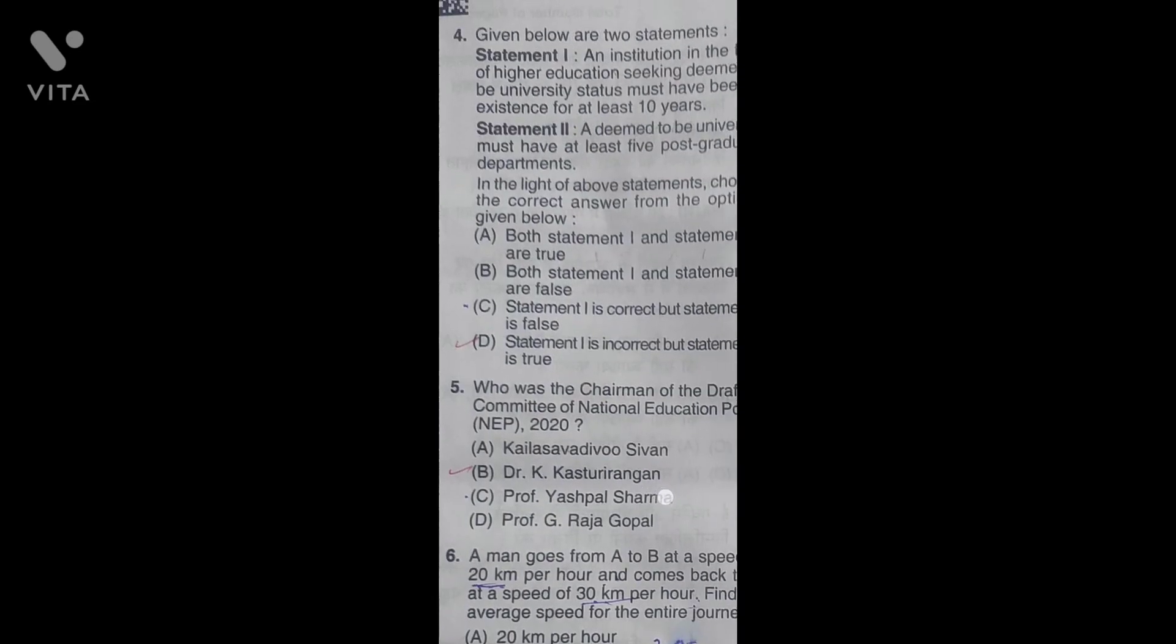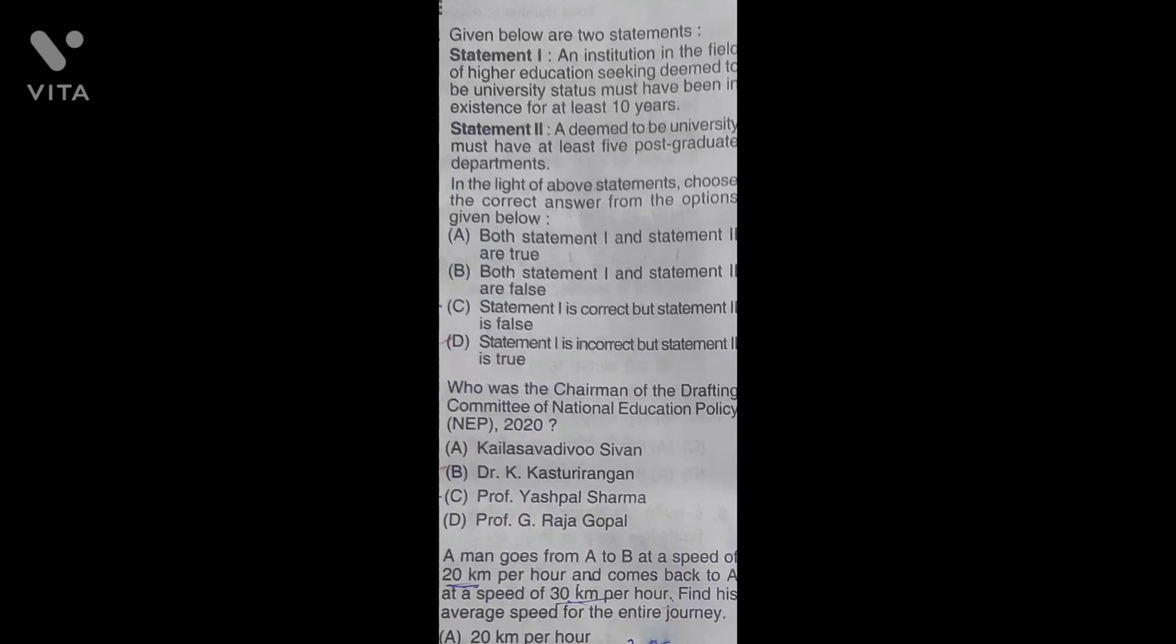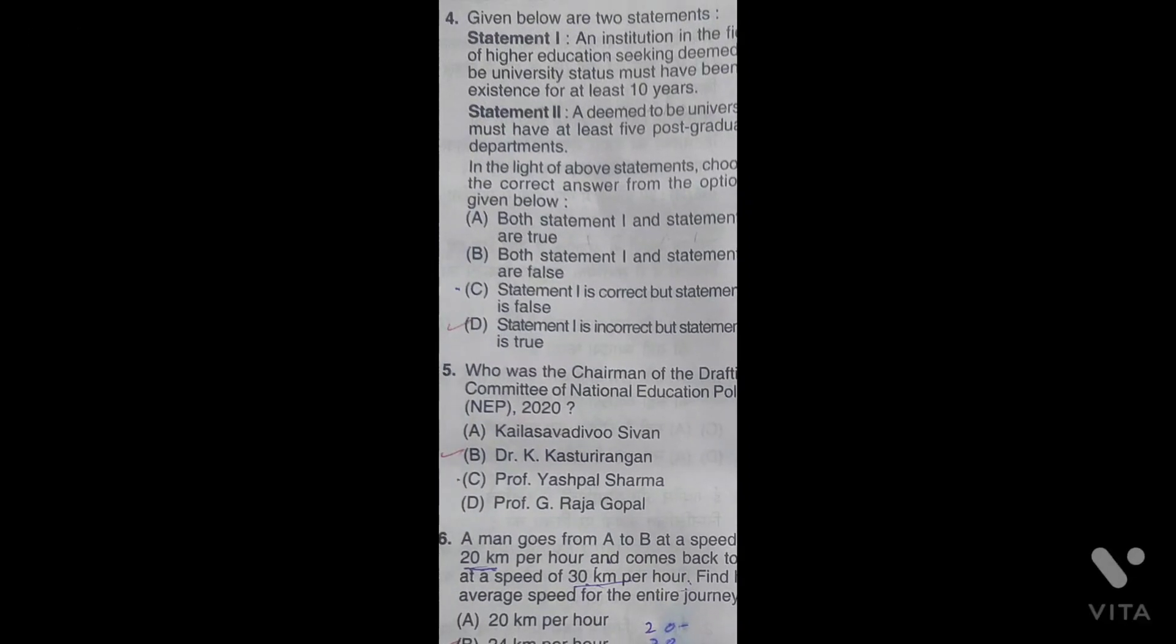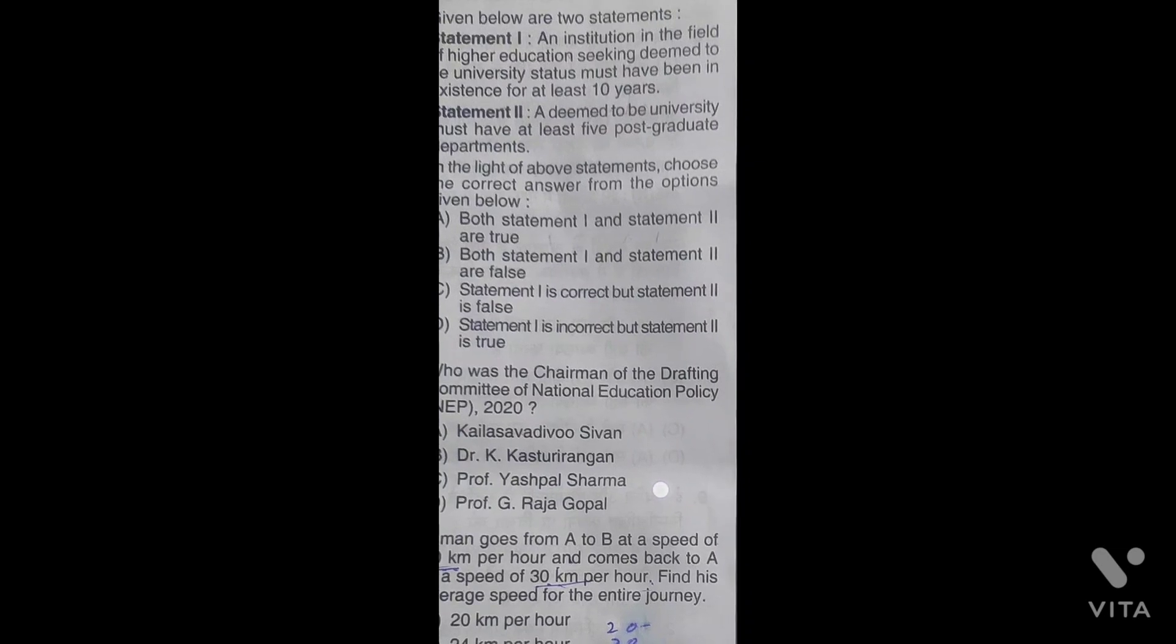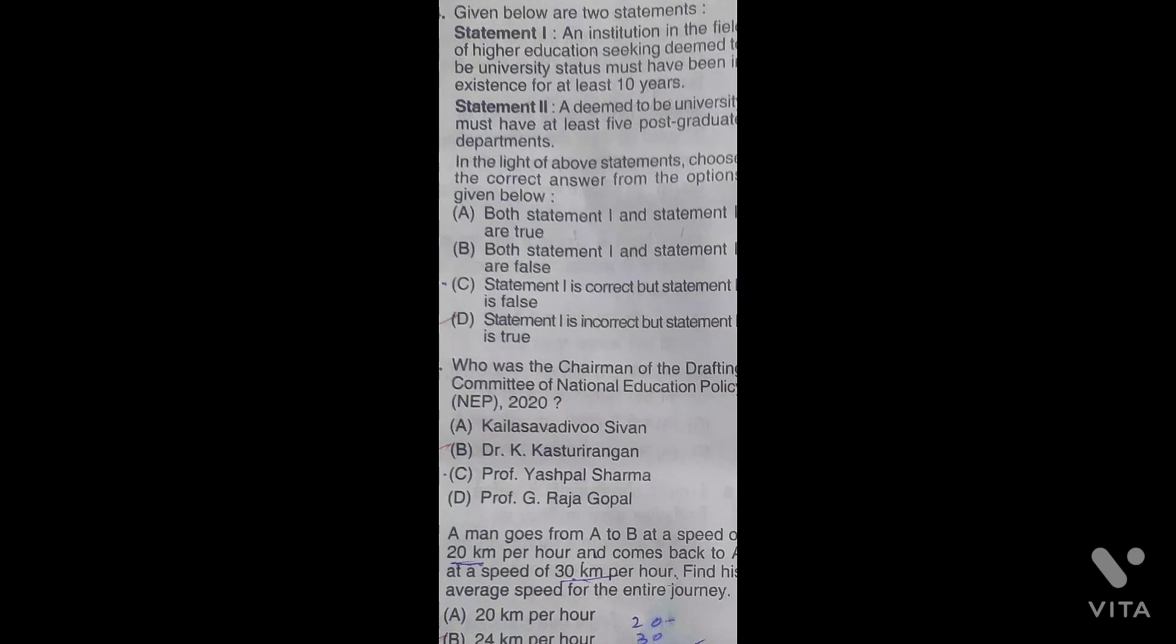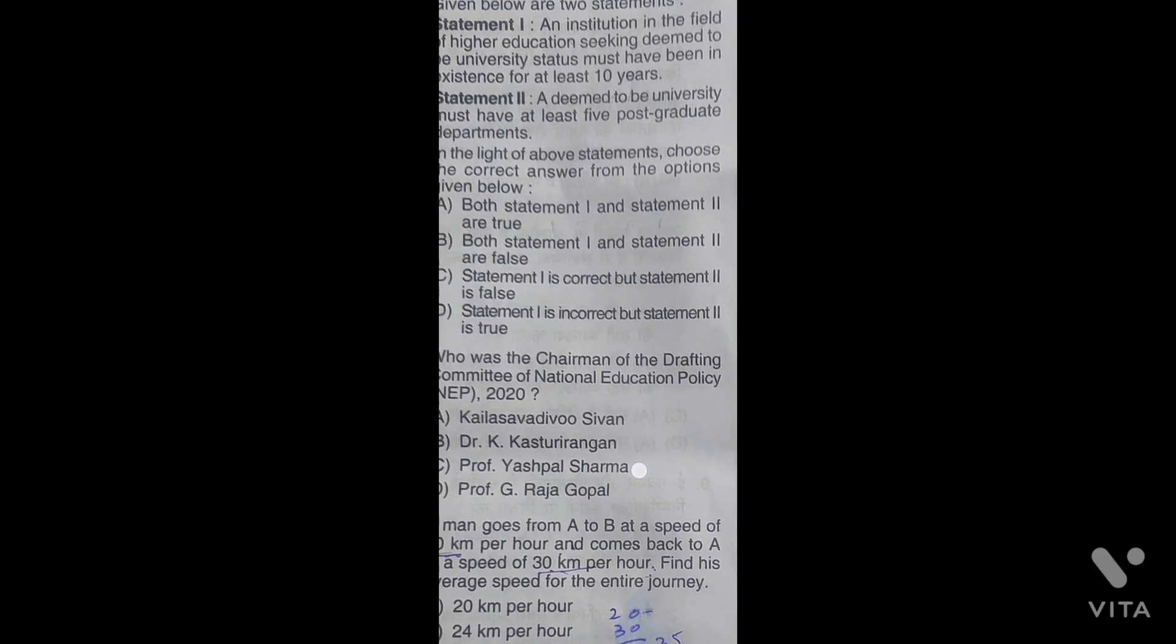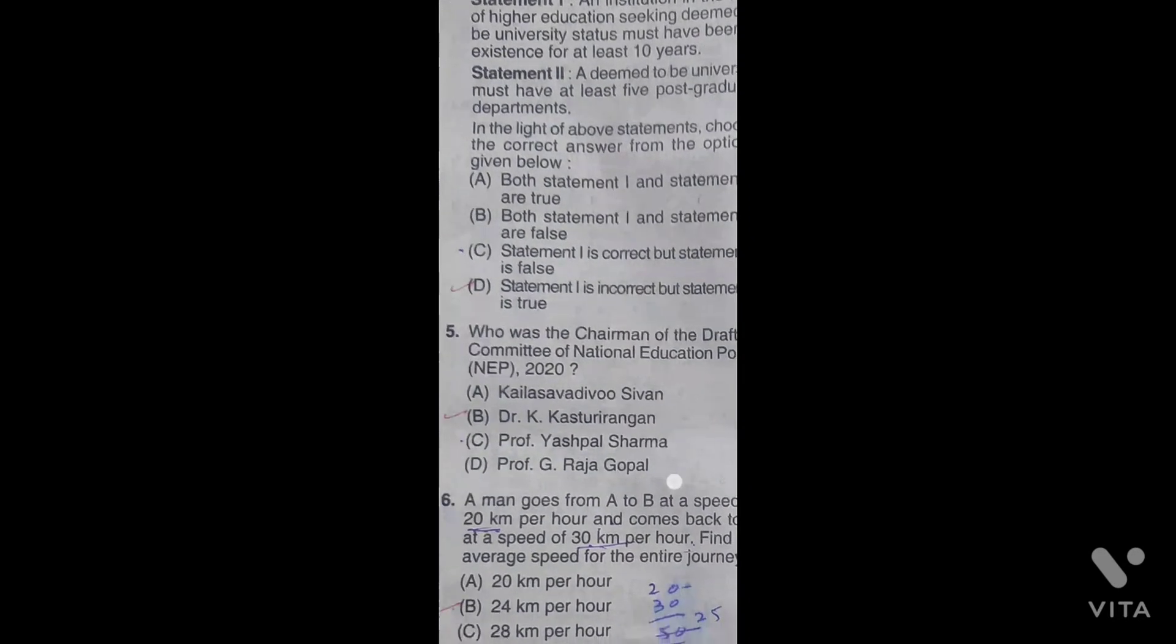Which universities are established by parliament? The correct answer is central universities. Another question has two statements. Statement one is an institution in the field of higher education seeking deemed to be university status must have been in existence for at least ten years. Statement two says to have at least five postgraduate departments. Both are correct, so the answer is D.